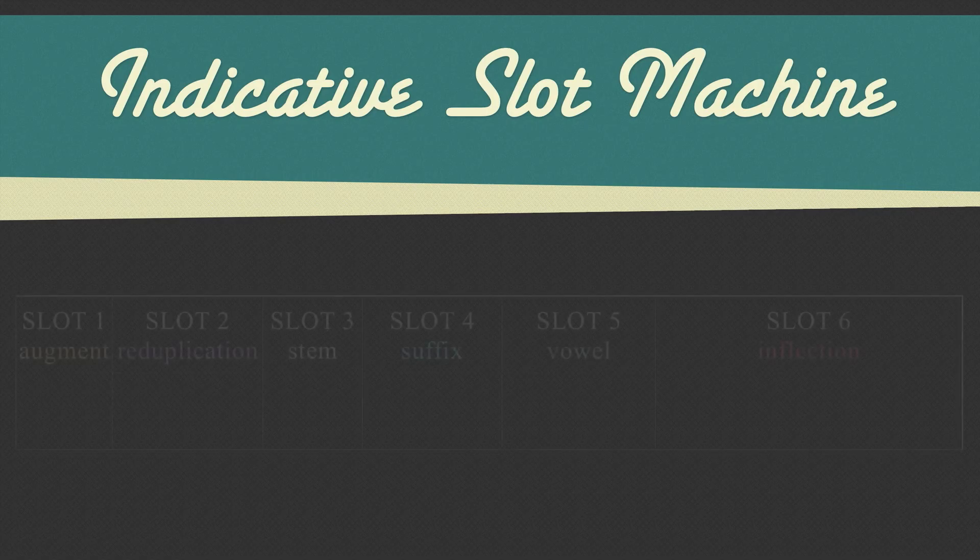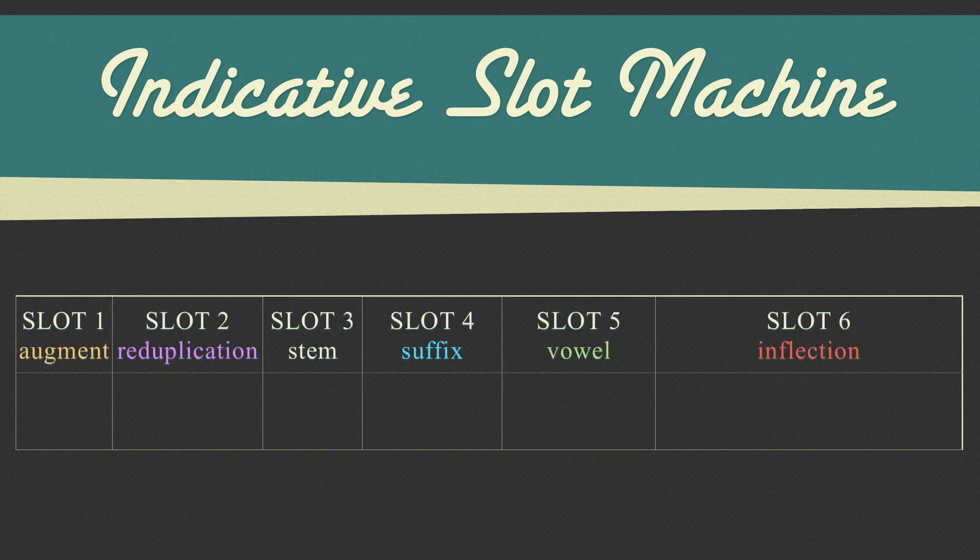We'll start at slot three because every word begins with its stem. In this case, working with trusty Luo, our stem is lu.